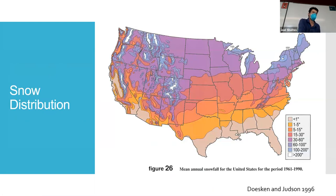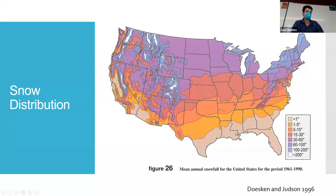Here's snow distribution across the country. Where's the most snow falling? The top of the Rockies — the Montana Rockies, the Cascade Range, and the Sierra Nevadas — that's where all the snow is falling.